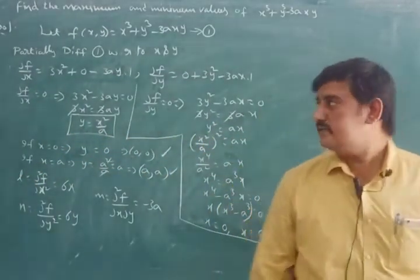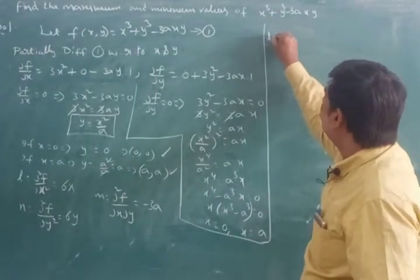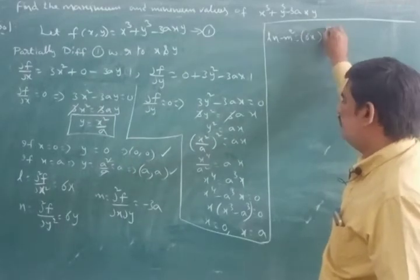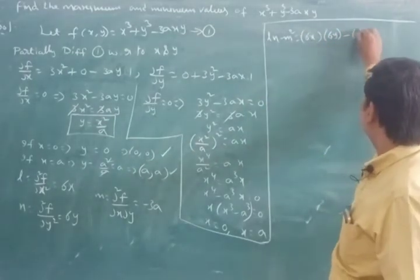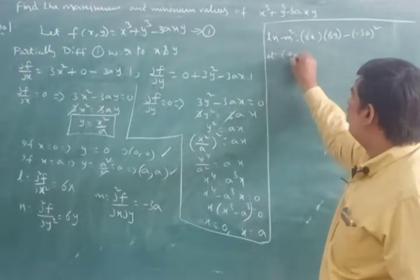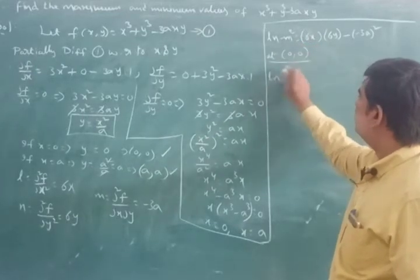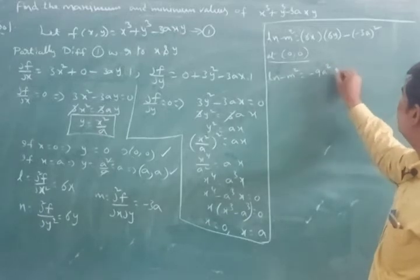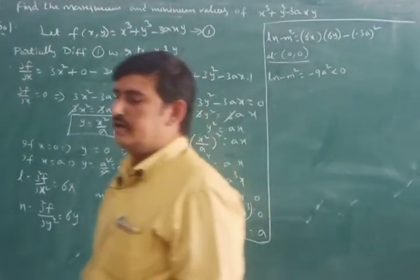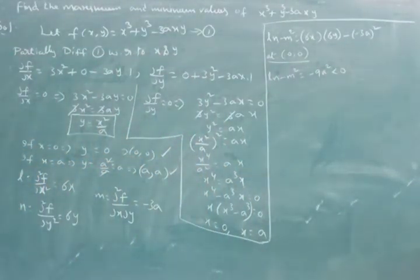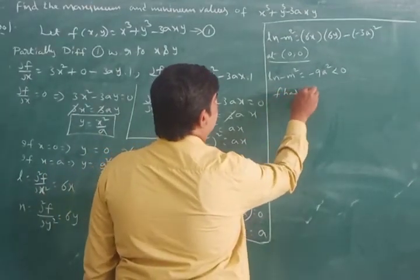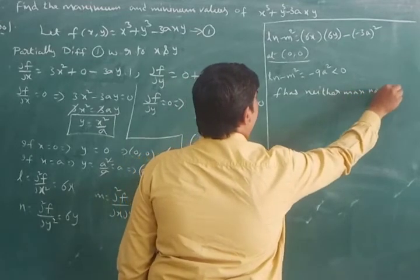Now evaluate ln − m² at the first point (0, 0). ln − m² = (6x)(6y) − (−3a)² = 36xy − 9a². At (0, 0): this becomes 0 − 9a² = −9a², which is less than zero. Since ln − m² < 0 at (0, 0), f has neither maximum nor minimum at (0, 0).